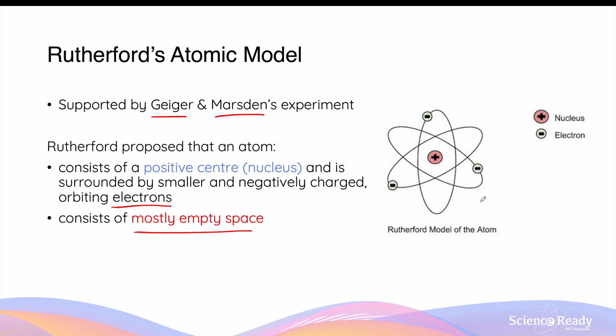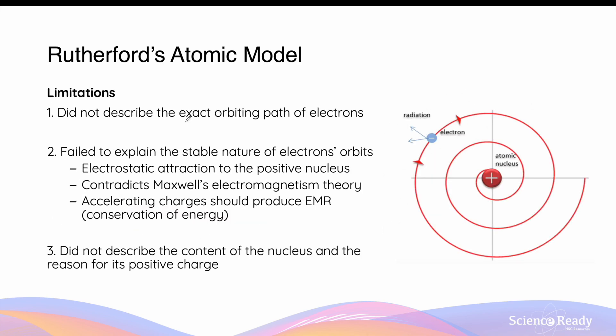This is a diagram representing Rutherford's model of the atom. Although Rutherford's model of the atom is superior to Thomson's model, it comes with limitations. The first limitation is that it did not describe the exact orbiting path of the electrons. Rutherford simply said that the central positive nucleus is surrounded by circling electrons.